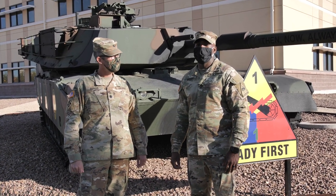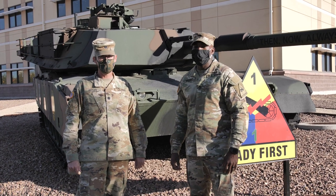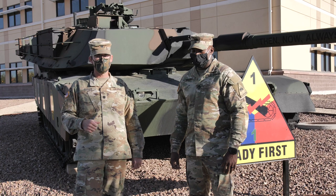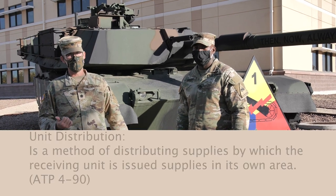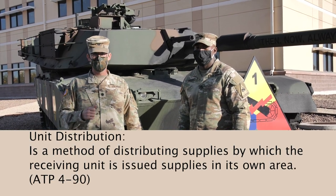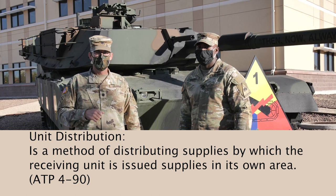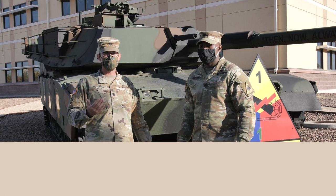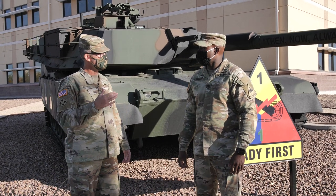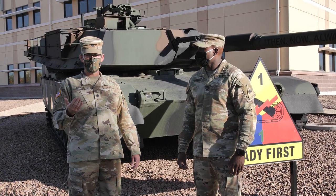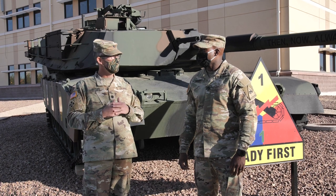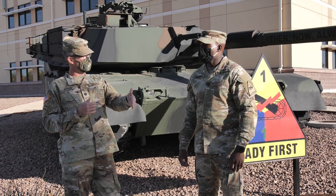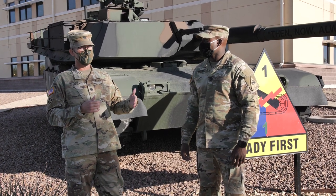Next we'll go into the methods of distribution, which are unit, supply point, and throughput. Unit distribution is when you deliver directly to a unit. An example of that would be our LRP operations. The FSC configures loads for that unit, they meet up at the LRP, they meet the organization there, and then the unit takes the FSC assets to their unit, to their combat trains, and does resupply there.